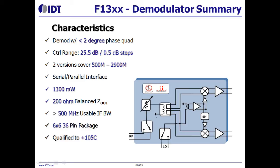It is very accurate, with up to 2-degree phase error. The digital step attenuator has a 25.5 dB range in 0.5 dB steps. Two versions cover 500 to 2900 MHz. It features 3-wire SPI power control, 1.3 watt low power consumption, and 200 ohm differential output impedance for direct ADC drive. 500 MHz IF band is important for higher-order harmonic processing in DPD for 4G applications. It comes in a 6x6 mm, 36-pin compact package, qualified to 105 degrees C.